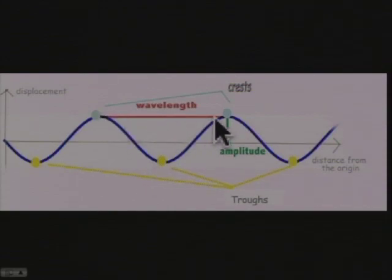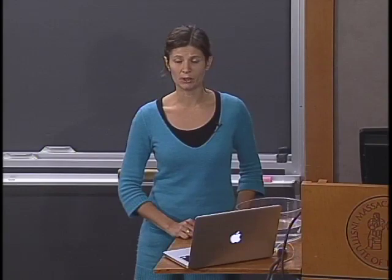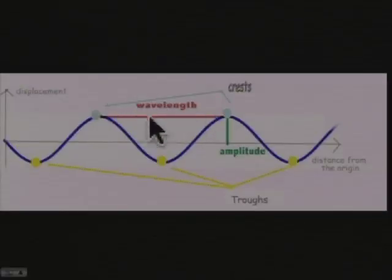The wavelength is the distance over which a wave repeats itself - for instance, the distance between two crests or between two troughs. You may have noticed that when you were increasing the frequency of oscillation, the wavelength, the distance between crests, was decreasing, and vice versa.